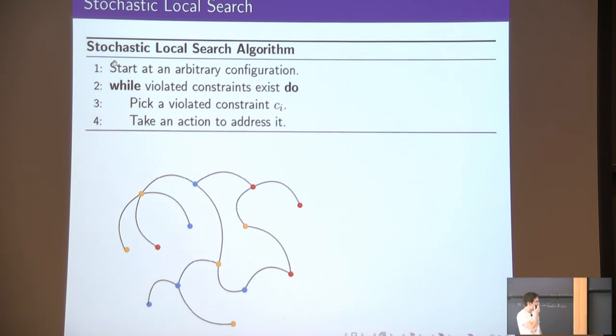What is a stochastic local search algorithm? In our running example, the problem of two-coloring, it starts at an arbitrary configuration of the problem, which is most likely not a valid one. And then, while violated constraints exist, it focuses on one, say this one, and takes some random action to fix it. It could possibly choose new values for the variables of the constraint at random.